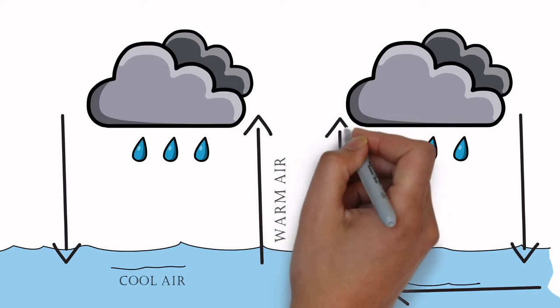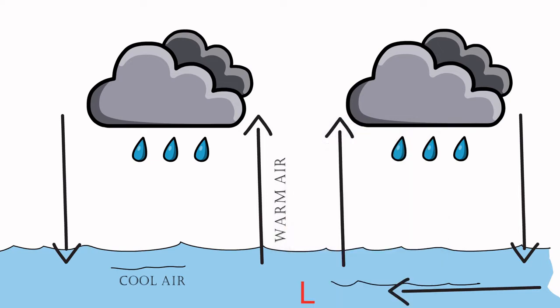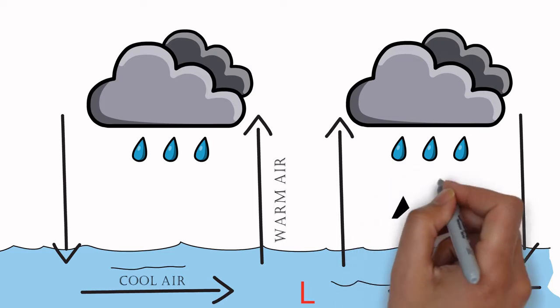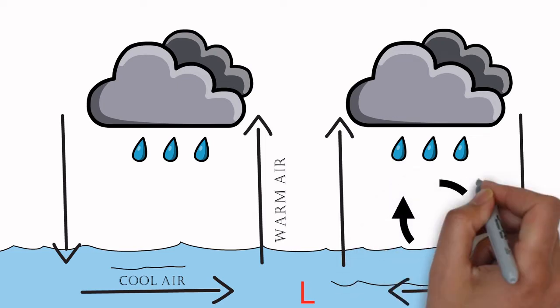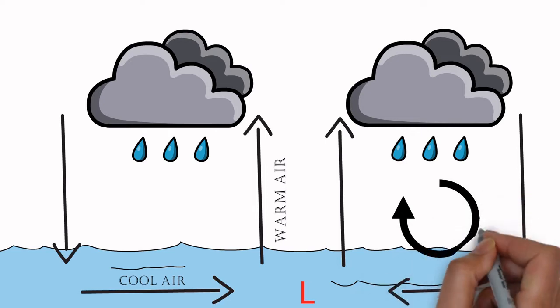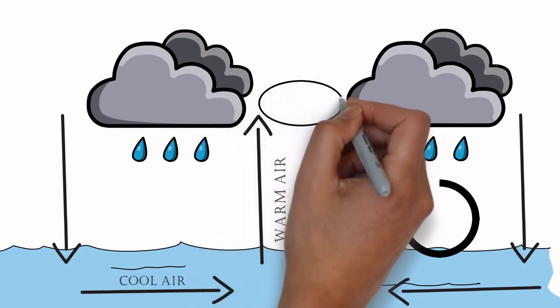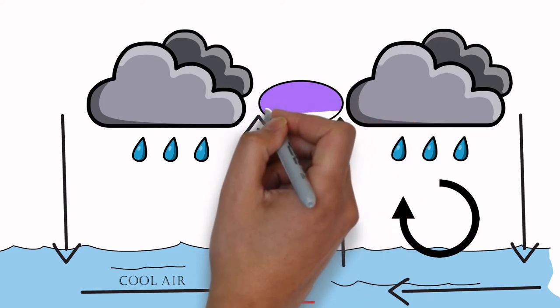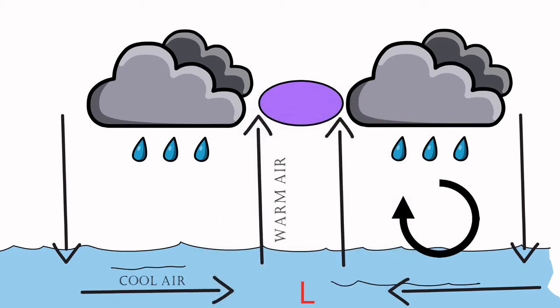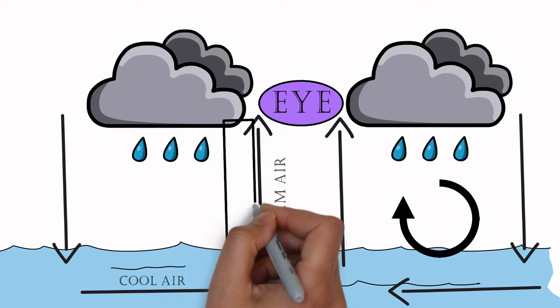The cyclones spin because of the Coriolis effect. Due to the Coriolis effect, the system spins anti-clockwise in Northern Hemisphere and clockwise in Southern Hemisphere.